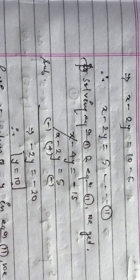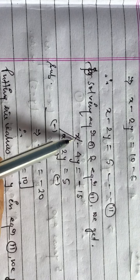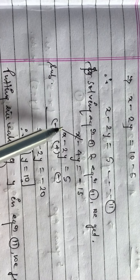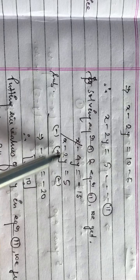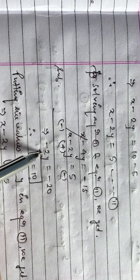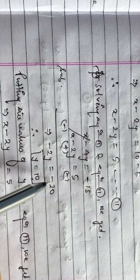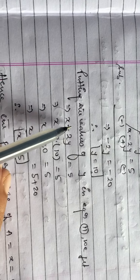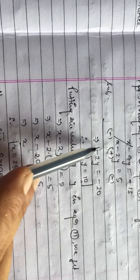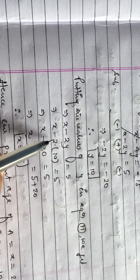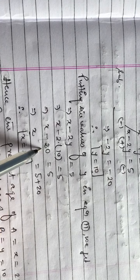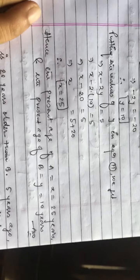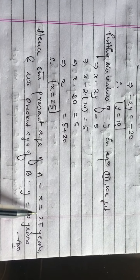Now solving equations 1 and 2: Equation 1 is x minus 4y = minus 15, and Equation 2 is x minus 2y = 5. Subtracting: minus 4y minus (minus 2y) = minus 15 minus 5, giving minus 2y = minus 20, so y = 10. Putting y = 10 into Equation 2: x minus 2 into 10 = 5, so x minus 20 = 5, giving x = 25.